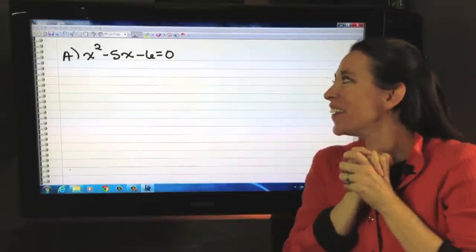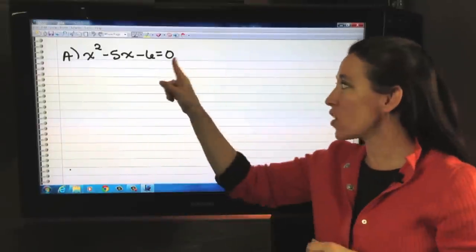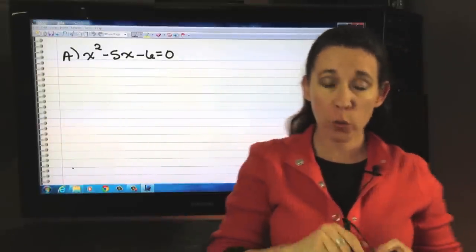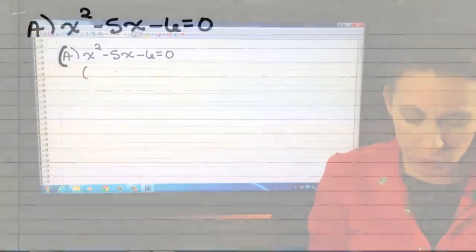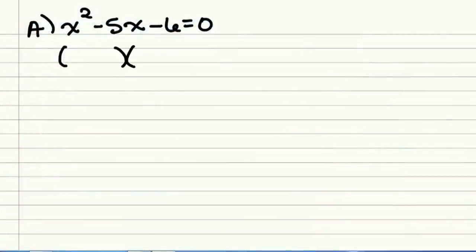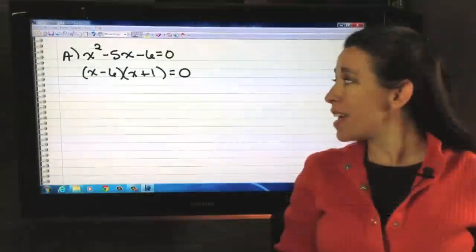All right, are you ready? We have a quadratic. It's already set equal to 0, so we're going to factor. Now, we're going to factor a little quickly. If you're still having trouble with the factoring method, be sure that you look at the videos and get some more help. So, let's see, factors of negative 6. We've got a negative 6 and a positive 1, set equal to 0.